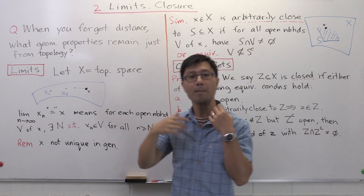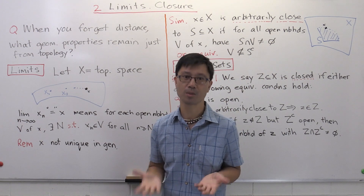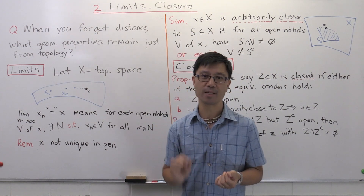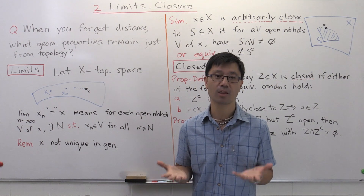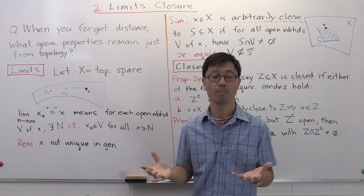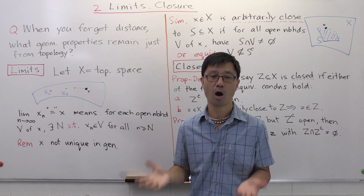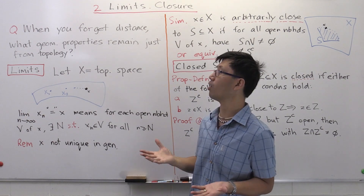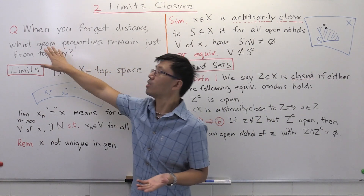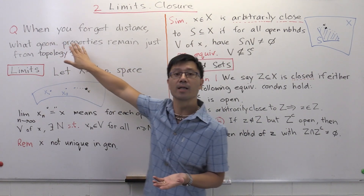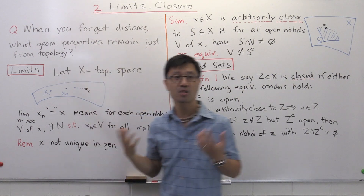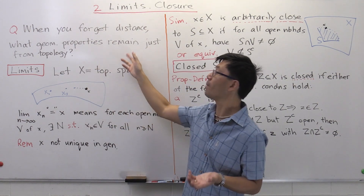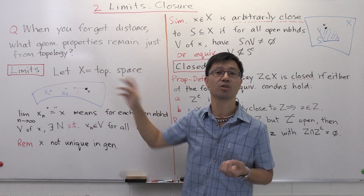So what do I mean by topological properties? Remember, in topological spaces, unlike in the theory of metric spaces, we don't have a notion of distance. But there is still geometry involved. The motivating question I want to look at here is: when you forget this notion of distance, what geometric properties remain just from the topology?